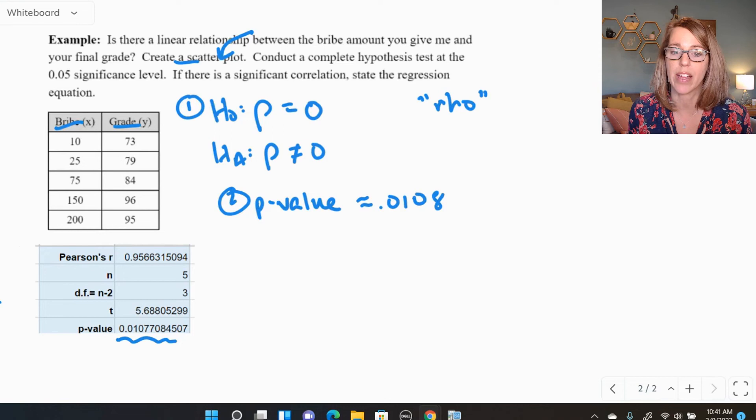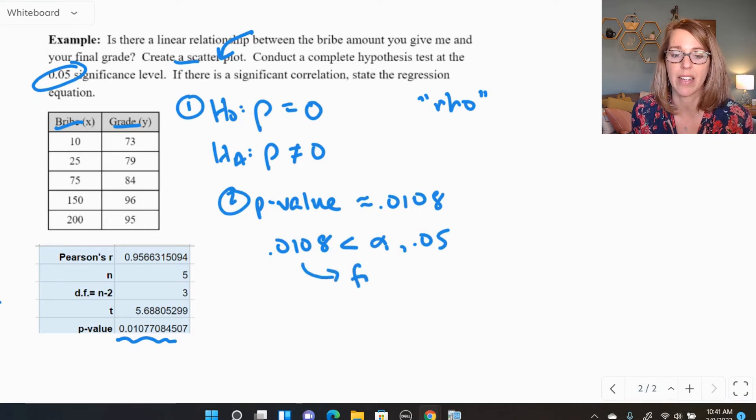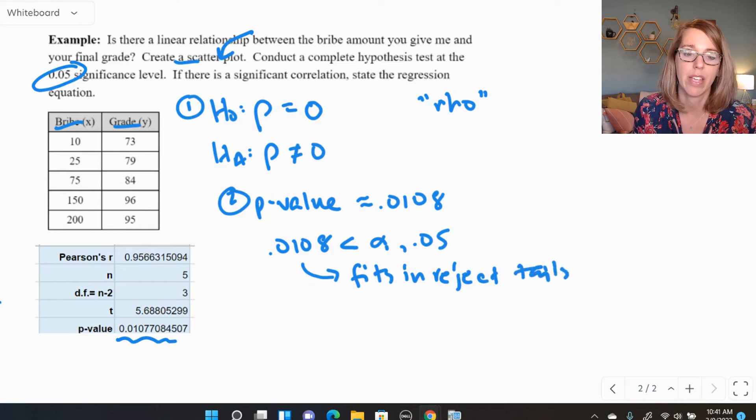I'm going to draw my conclusion next and I'm comparing my P value area to my significance level of 0.05. 0.0108, my P value is smaller than my significance level of 0.05. This means that that area fits inside my rejection tail. So it fits in the rejection region. I'm just going to call it the reject tails. So that P value area is significant. So step number three, that's going to mean that we reject the null hypothesis.